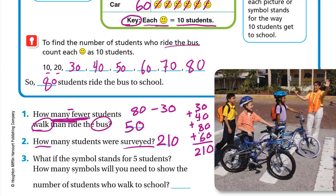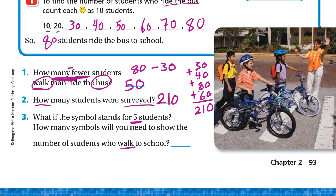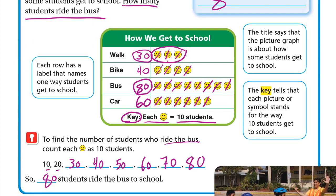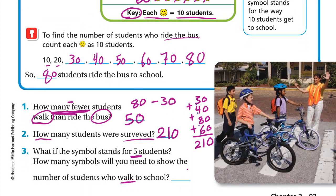What if the symbol stands for 5 students? How many symbols will you need to show the number of students who walk to school? If the symbol is 5 students, not 10, how many symbols will we use? We needed 3 symbols because each symbol was 10. If each symbol is only 5 students, we need to double the number of symbols, because each 2 symbols now means 10. So instead of 3 symbols we will need 6 symbols.